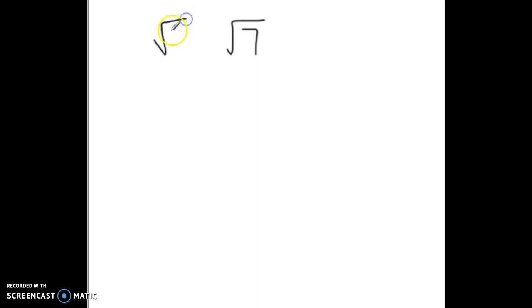In this case, the square root of 4 and the square root of 9. Those are the two perfect squares on either side of 7.